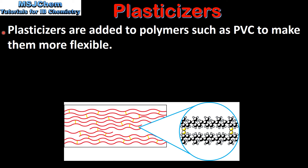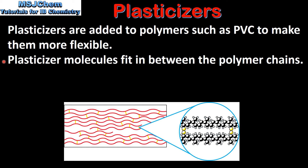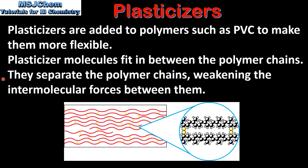Plasticizers are added to polymers such as PVC to make them more flexible. The plasticizer molecules fit in between the polymer chains. In this diagram we can see the plasticizer molecules between the polymer chains — they separate the polymer chains, weakening the intermolecular forces between them, which makes the polymer more flexible.